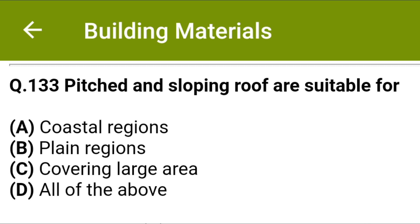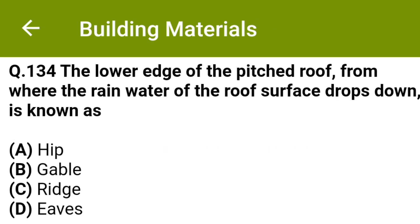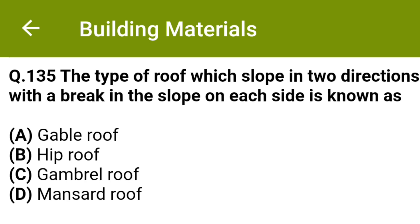Pitched and sloping roofs are suitable for: option A coastal regions, option B plain regions, option C covering large area, option D all of the above. The correct answer is option A, coastal regions. The lower edge of the pitched roof from where the rainwater of the roof surface drops down is known as: option A hip, option B gable, option C ridge, option D eaves. The correct answer is option D, eaves.